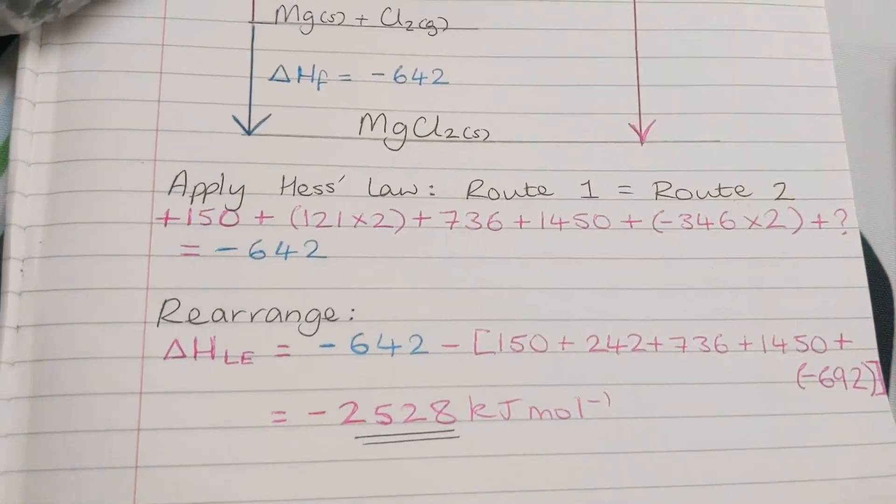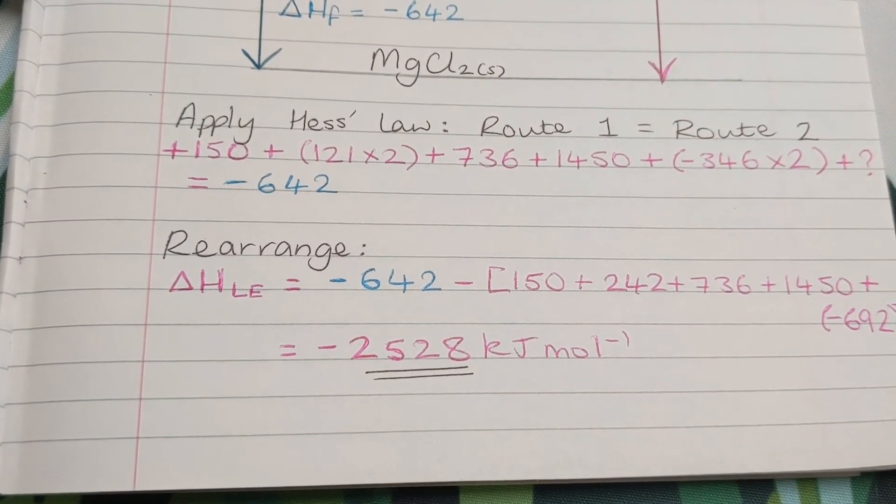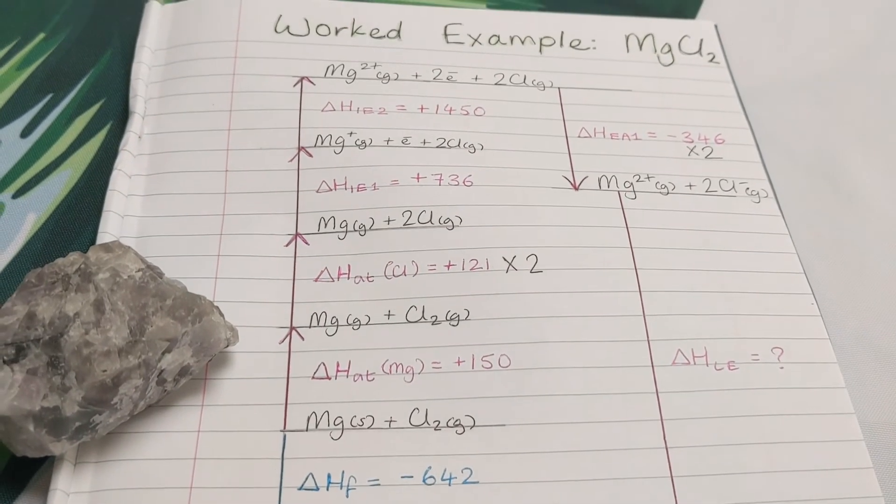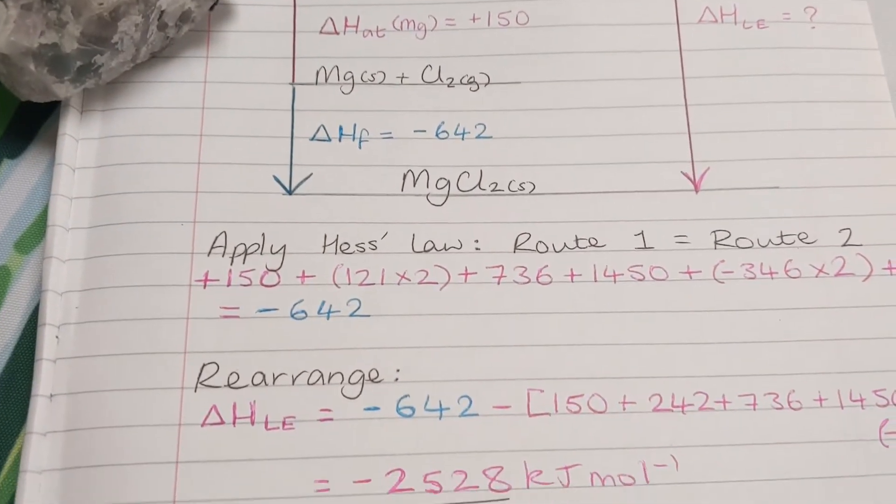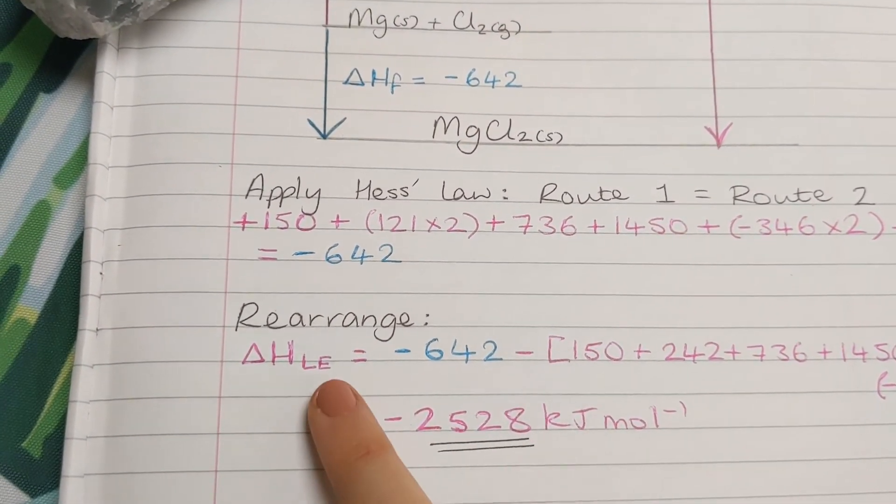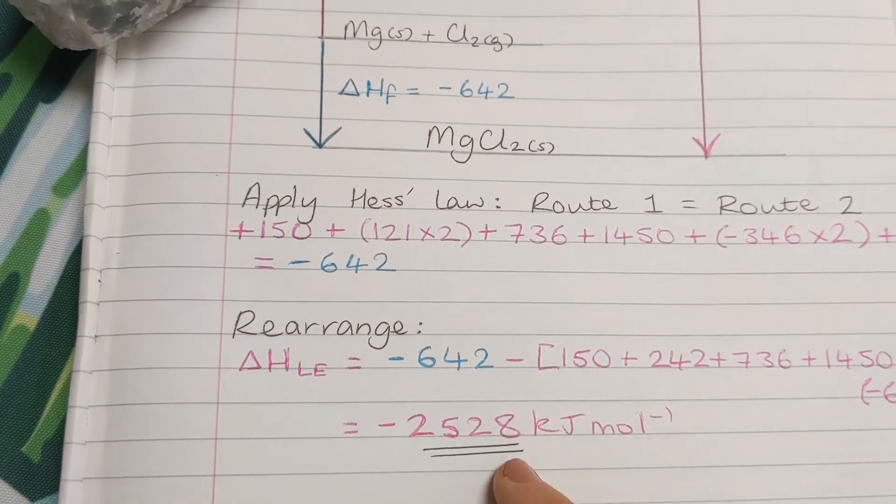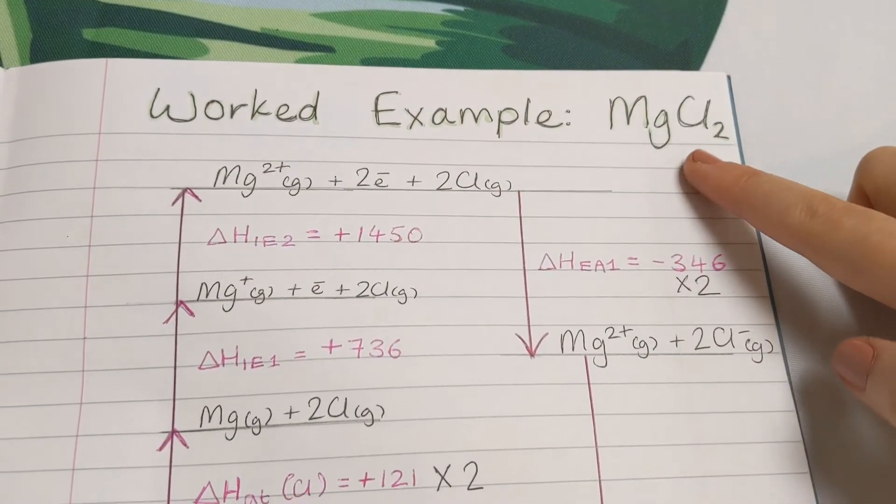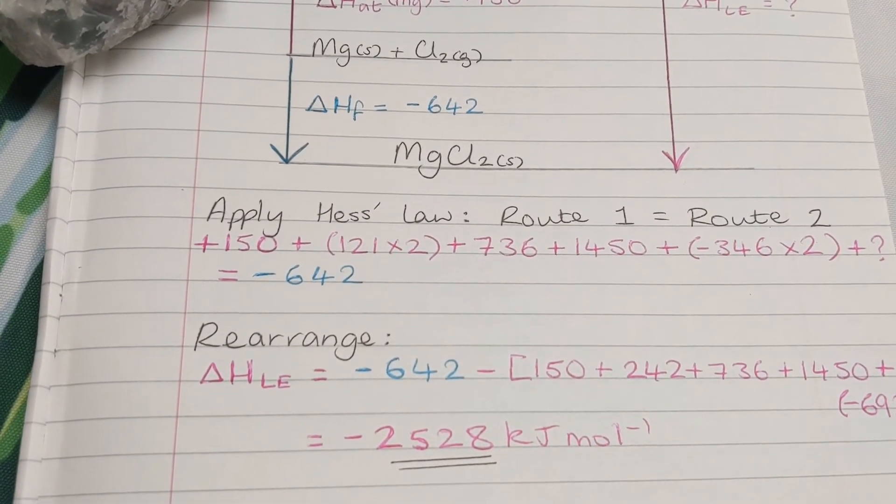And the bigger the negative number, the bigger the enthalpy change, the stronger the bonds are in the ionic compound. So if you've watched the sodium chloride video, this is a bigger negative number compared to the lattice enthalpy that we got for sodium chloride. Therefore the bonds in magnesium chloride are stronger compared to the bonds in sodium chloride.